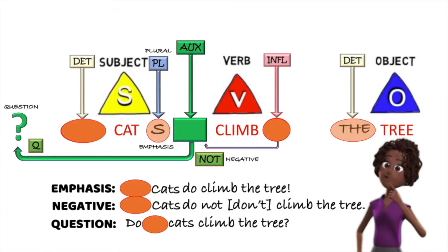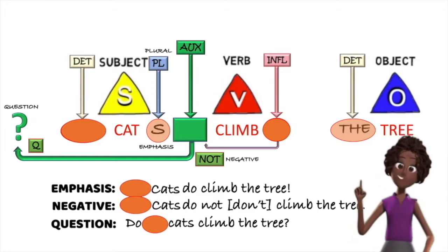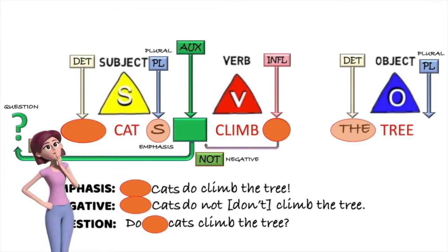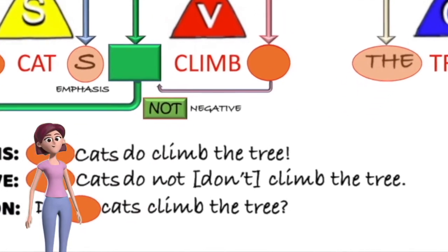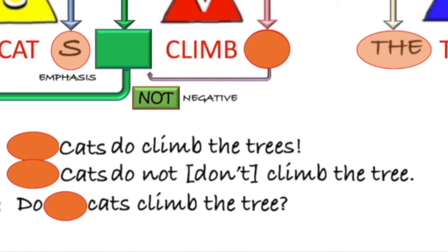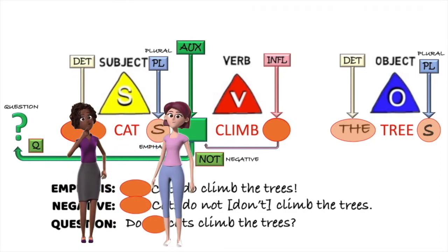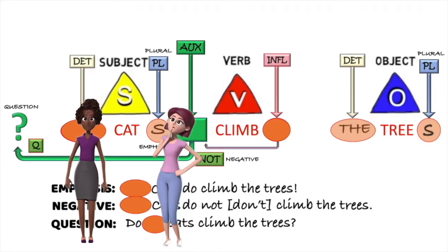So that would be cats in general, climbing one particular tree? Yes, any cats, but just one particular tree. And could they climb more than one tree? Of course. Then it would be cats do climb the trees, cats don't climb the trees, and do cats climb the trees? But there would still be a particular group of trees, wouldn't they? Like the trees in someone's garden, or something. Suppose it was trees in general.